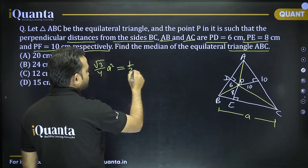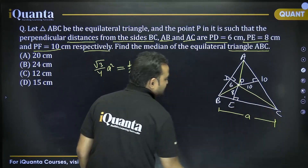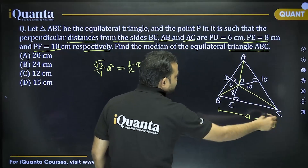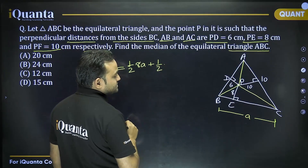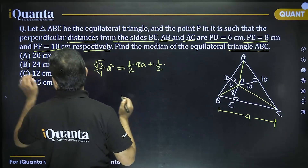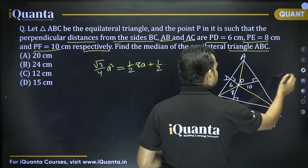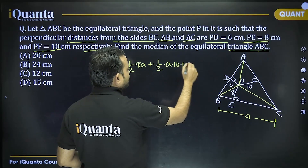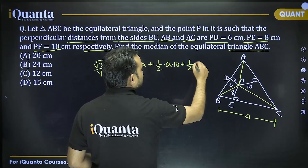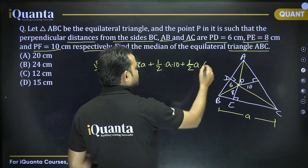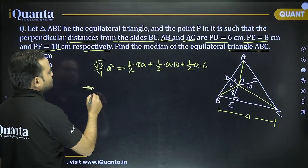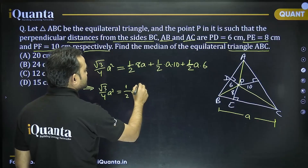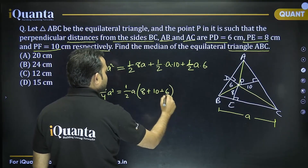The total area equals: ½ × a × 8 (triangle BPC) + ½ × a × 10 (triangle APC) + ½ × a × 6 (triangle APB), where a is the side length. This equals the total area (√3/4)a². Taking ½a common gives: (a/2)(8 + 10 + 6) = (√3/4)a².